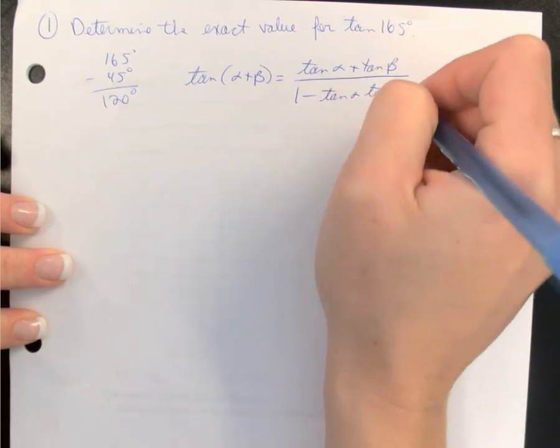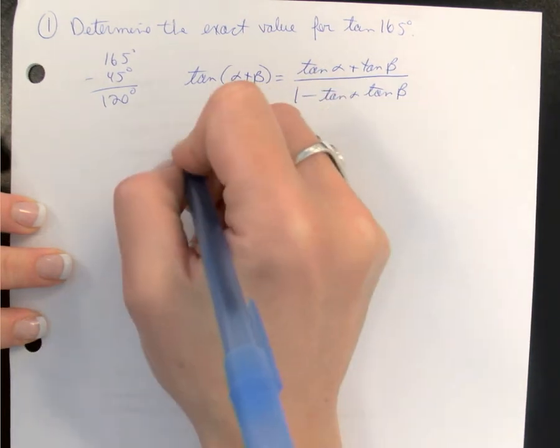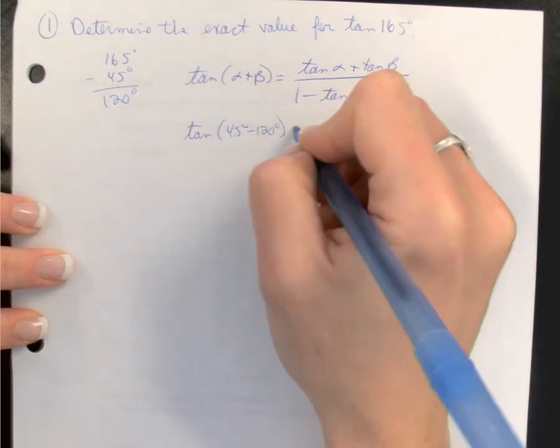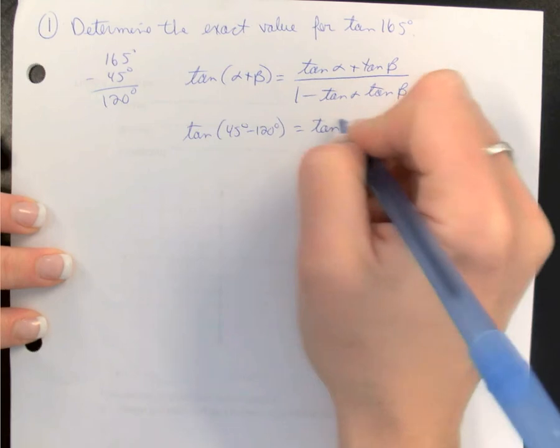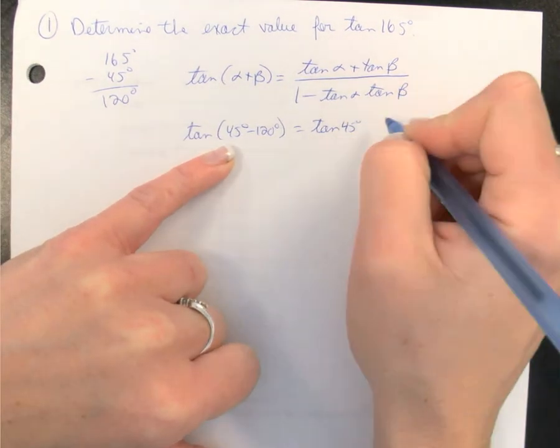And we're going to use the angles 45 degrees and 120. Because we're adding, it does not matter which one we put first. I chose α is 45 degrees. So every time I see the alpha symbol, I'm putting 45 in and β will be 120 degrees.